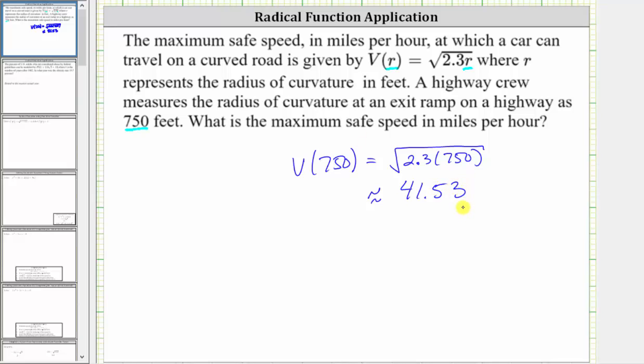We want to give the answer as a whole number and normally here we would round up because of the five in the tenths place value, but if we rounded up to 42, that would be faster than the maximum safe speed and therefore we'll round down to 41 miles per hour. So the maximum safe speed is approximately 41 miles per hour.